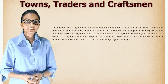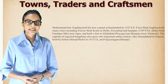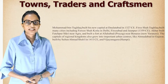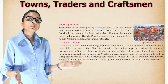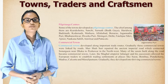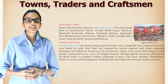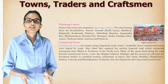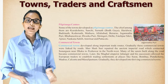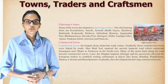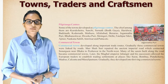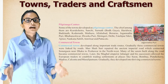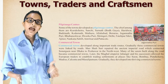The capitals of regional kingdoms also grew into important urban centers, like Ahmedabad in Gujarat, built by Sultan Ahmed Shah in 1411 CE, and Vijayanagara (Hampi). Some towns developed as pilgrimage centers. The chief among them are Kurukshetra, Sanchi, Sarnath, Bodh Gaya, Haridwar, Badrinath, Kedarnath, Mathura, Allahabad, Banaras, Jagannath Puri, Bhubaneshwar, Dwarka, Puri, Srirangam, Delhi, Fatehpur Sikri, Ajmer, Nankana Sahib, Amritsar, and Patna.